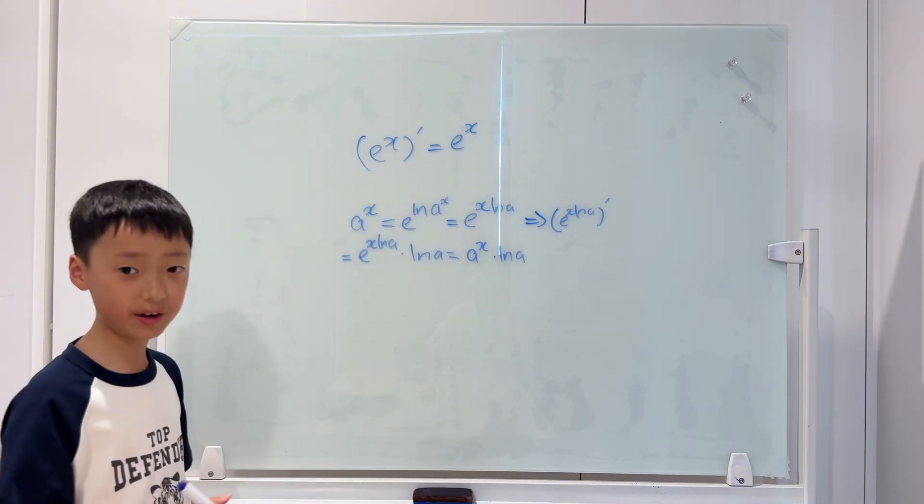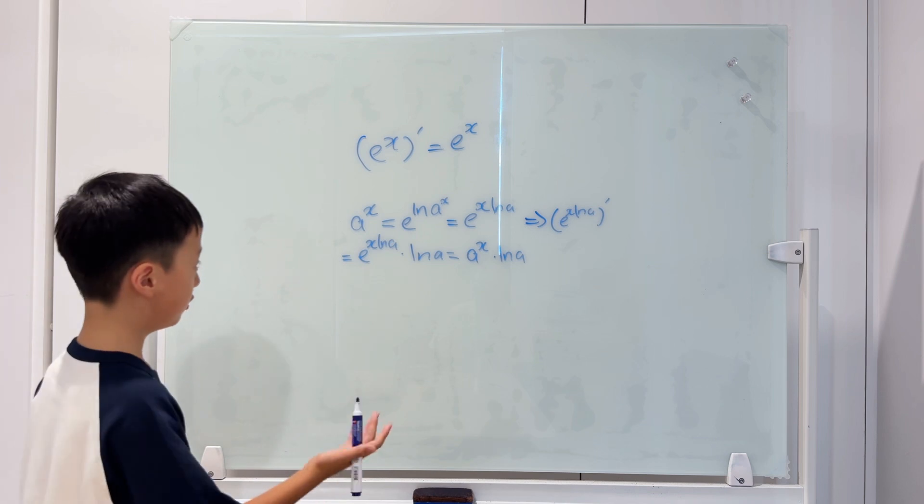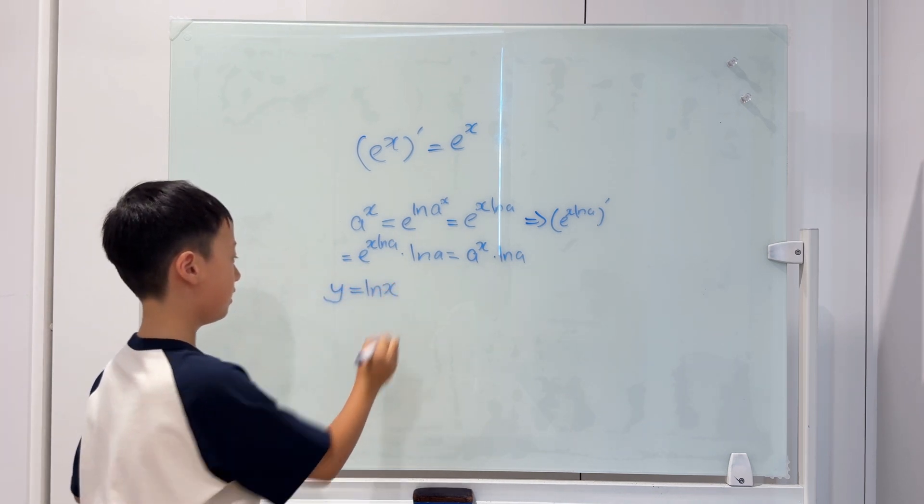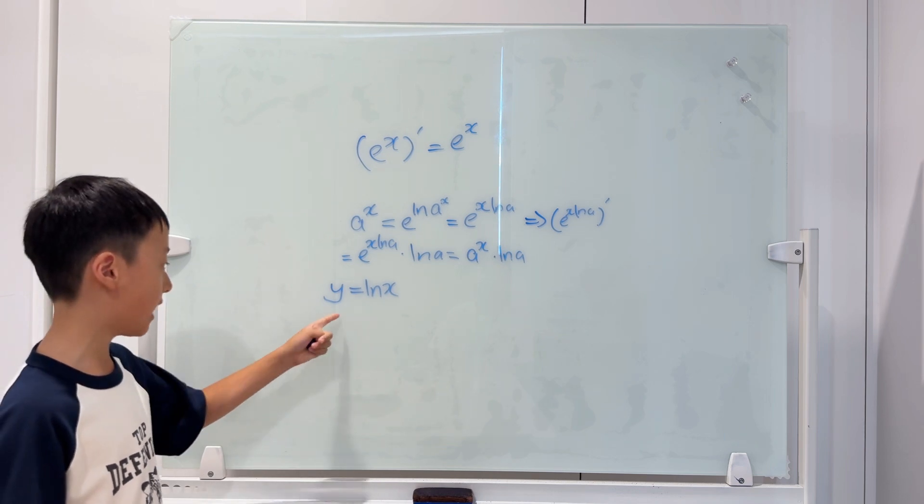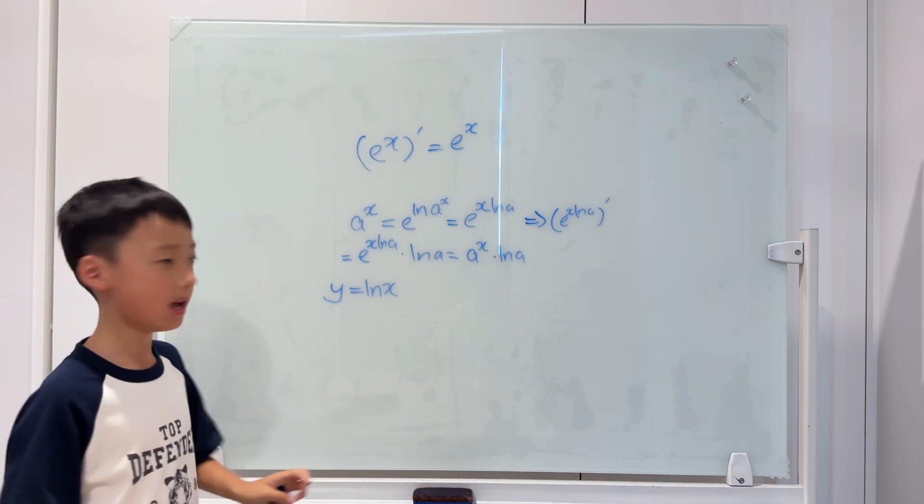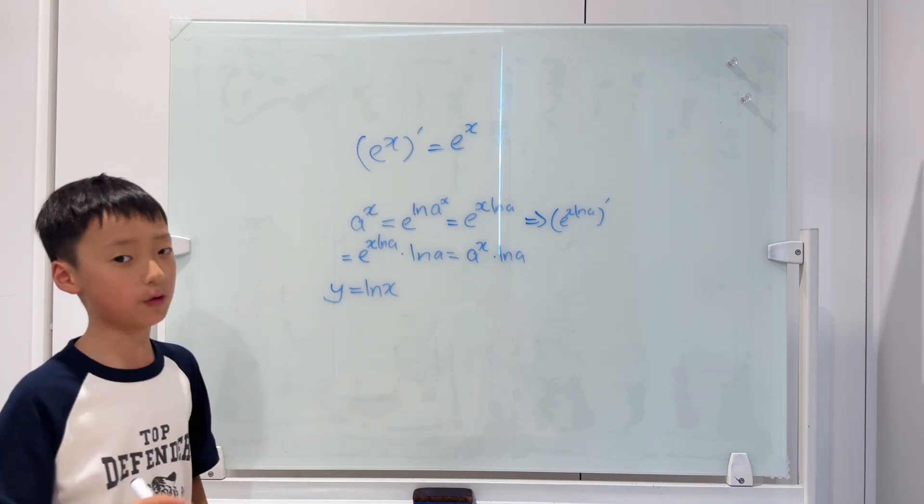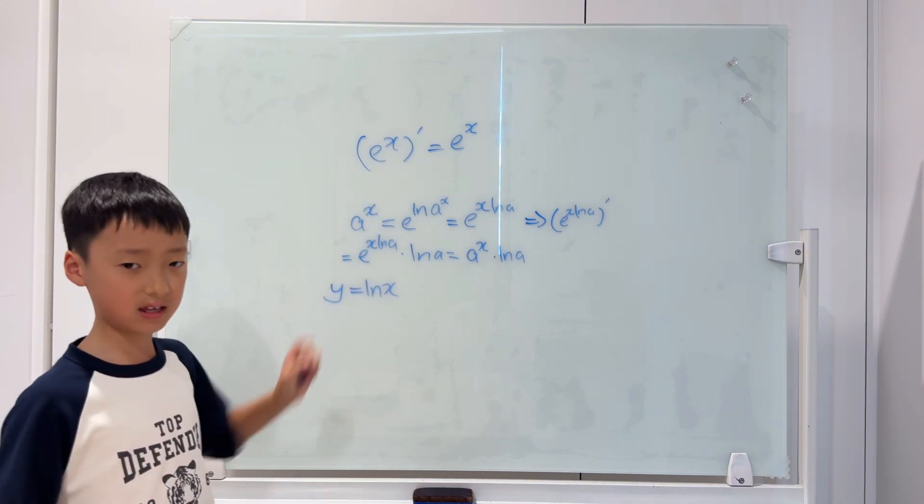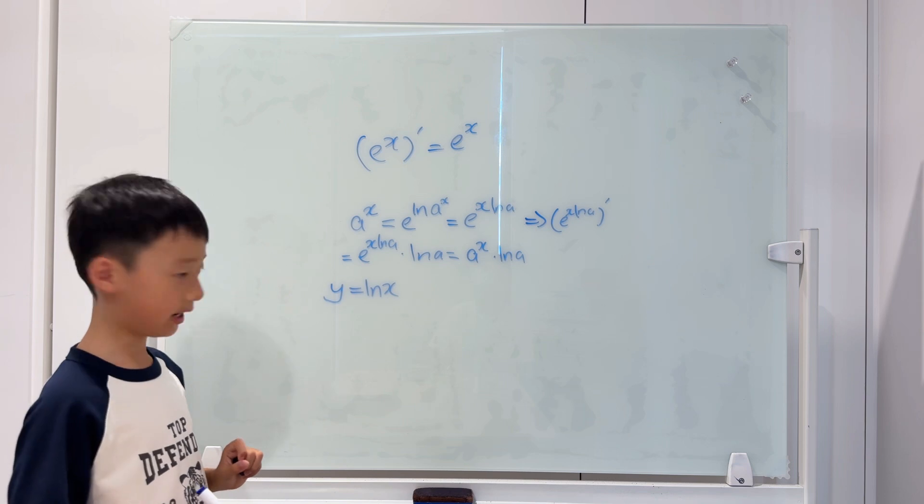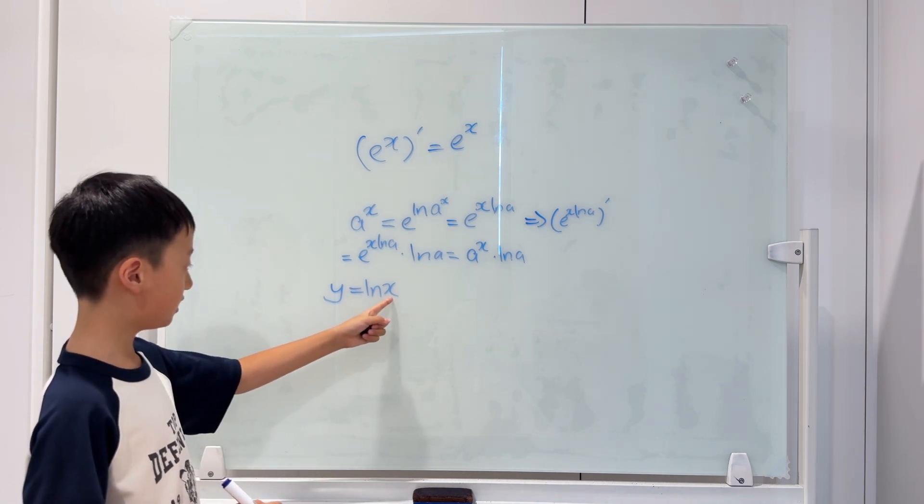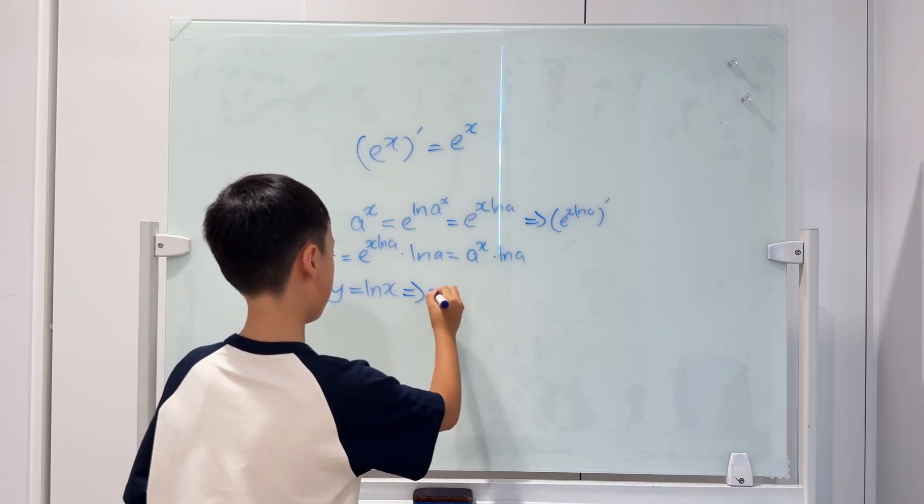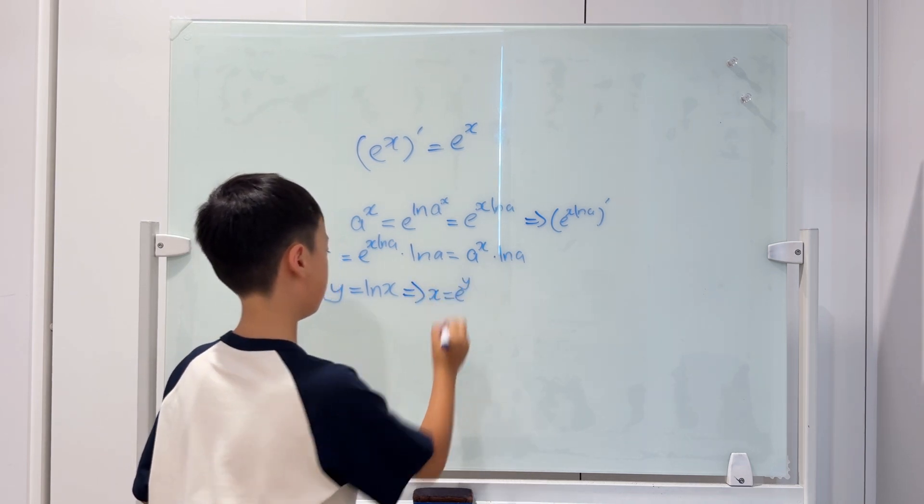There's another one that will also become more simple, which is y equals ln x. There's a reason why I'm writing y equals ln x. Because we will be using dy over dx. How do we make e? I know. We just change the x into e to the power of y. x equals e to the power of y.